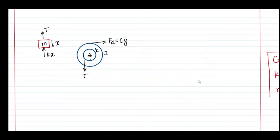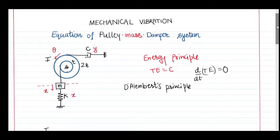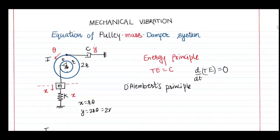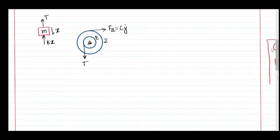Looking at the entire system we can establish the relation between x, y, and theta. The first pulley rotates by theta, and x = r·theta. The y coordinate is connected with the larger pulley, so it will be 2r·theta, which means y = 2x. All three coordinates are dependent, and I am going to select the x coordinate for the entire equation.